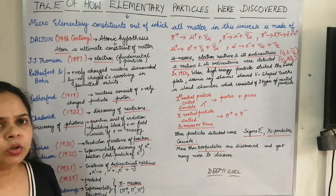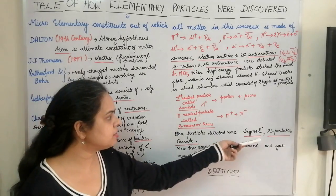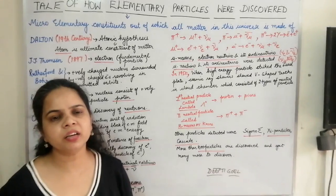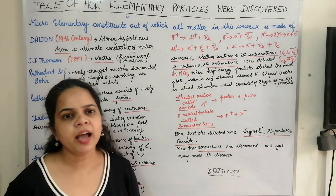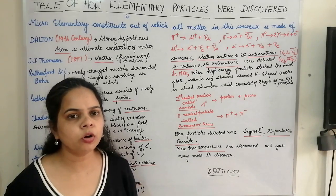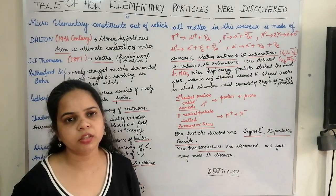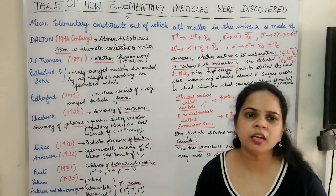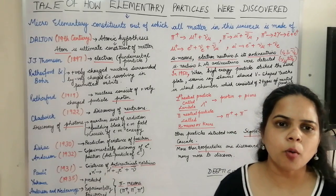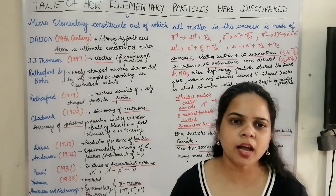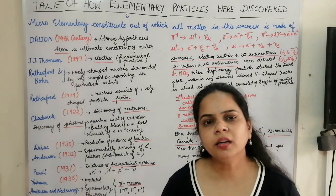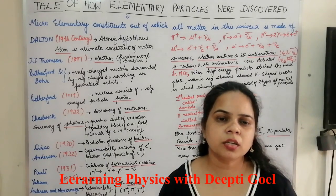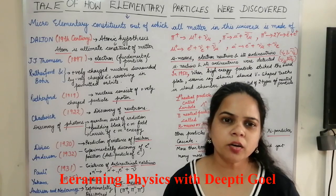Similarly, other particles were also detected by other scientists — sigma, xi, cascade, and omega. There were many other particles, and till now more than 200 particles have been detected, with research still continuing and more new particles yet to be discovered. The list is endless. We shall now see the basic properties of these elementary particles, the basis of their classification, and what conservation laws they conserve.